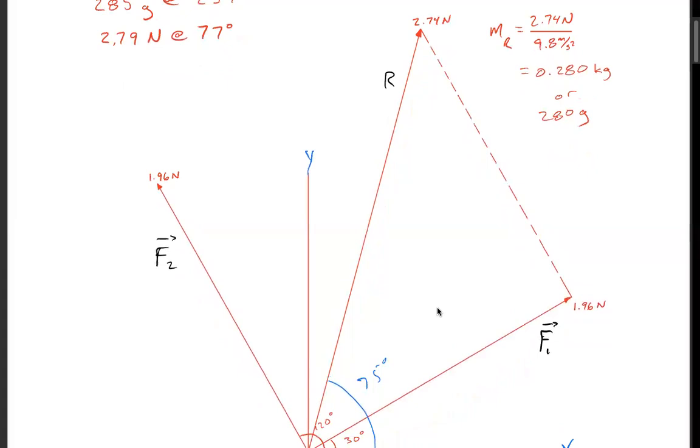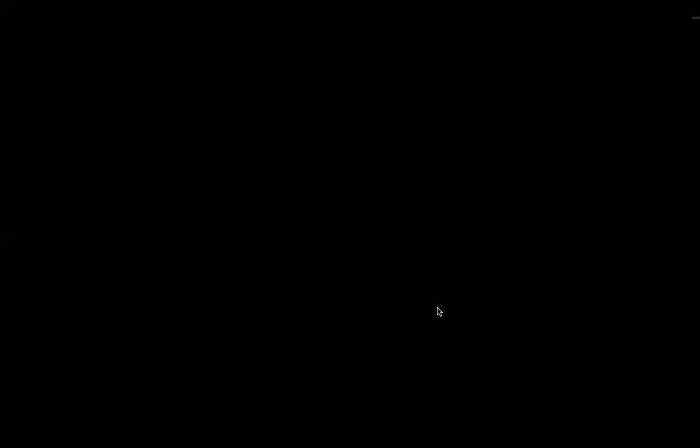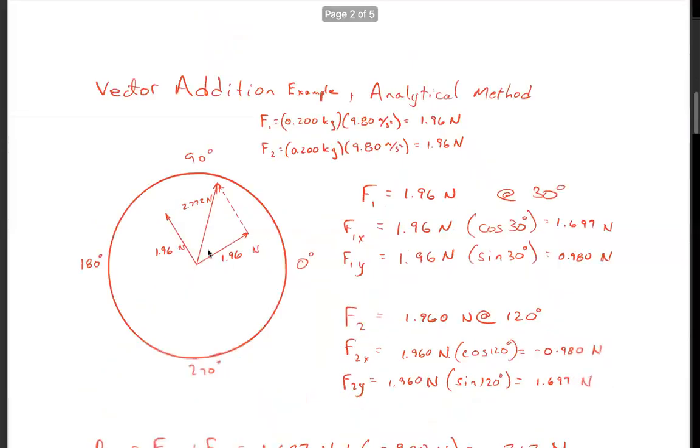Now we're going to do the analytical method. I have my 200 grams which is 1.96 Newtons in this direction, and then 1.96 Newtons in this direction at 120 degrees. And we want to analytically find the resultant.